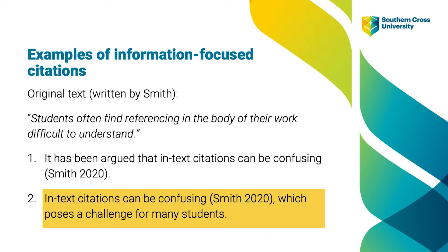In the second example, the citation is embedded in the middle of the sentence, so the paraphrase comes first: In-text citations can be a little confusing. This is followed by the citation — Smith, 2020 — in brackets. Notice again that there is only a space between the author name and the date; there is no comma. This is then followed by an additional idea: which poses a challenge for many students.